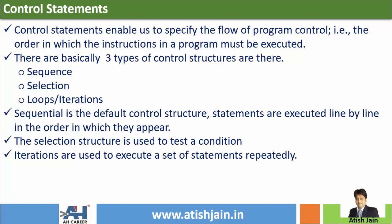There are basically three types of control structures. First one is sequence. Second one is selection. Third one is loops or iterations. Sequence is the default control structure. The segments are executed line by line in the order in which they appear — each and every line is executed one by one from top to bottom, and no line is skipped.